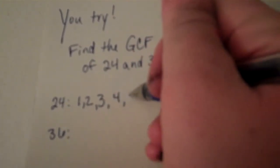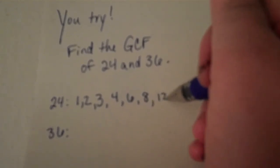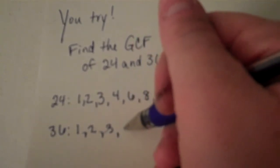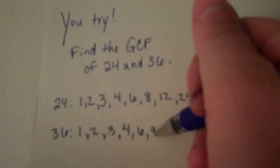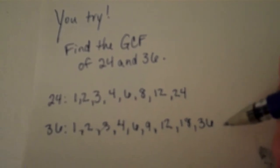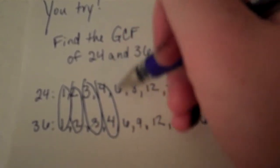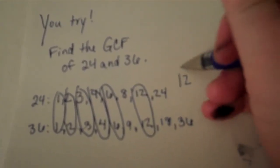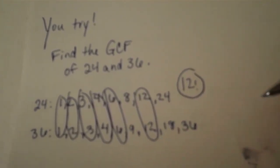Here's the solution. The factors of twenty-four are one, two, three, four, six, eight, twelve, and twenty-four. The factors of thirty-six are one, two, three, four, six, nine, twelve, eighteen, and thirty-six. Common factors include one, two, three, four, six, and twelve. So twelve is the greatest common factor — it's the biggest number on both lists.